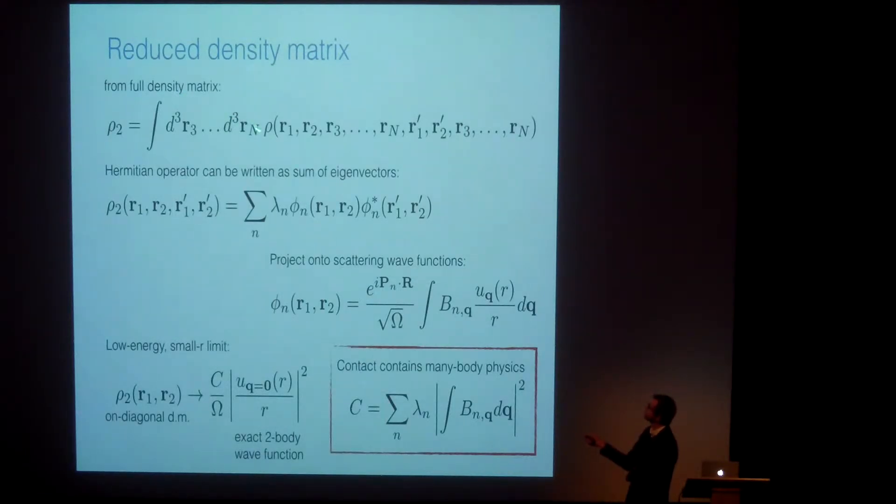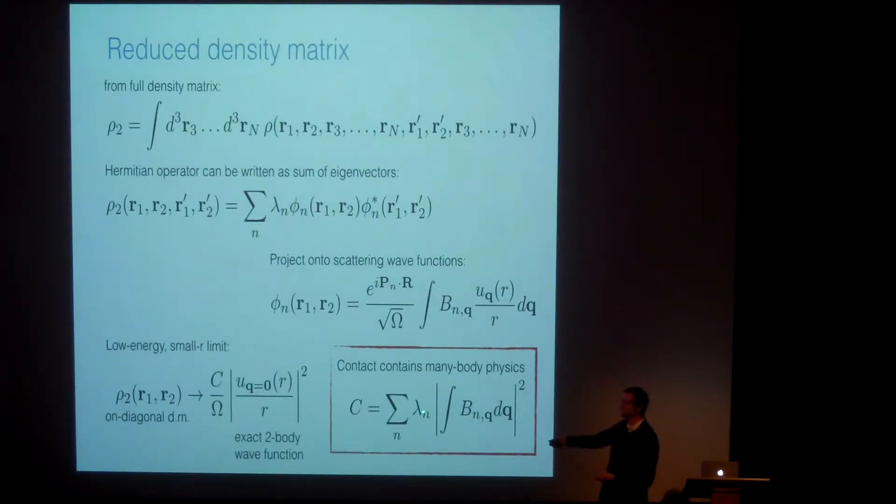So, if I take a full density matrix, my apology for the equations, this is something for the theorists. If you take the full density matrix, you trace over the third particle out to the nth particle, you get this two-body density matrix, and this two-body density matrix is a Hermitian thing, so you can diagonalize it. So, the contact is essentially projecting these eigenvectors onto the scattering wave function, and so the c value that I keep showing you is mathematically the sum over all the eigenvalues of the two-body density matrix times some kind of projection coefficients onto the scattering wave function. So, encapsulated in the contact is a whole bunch of many-body physics, and if I sum them all up, I get a single scalar quantity in the contact.